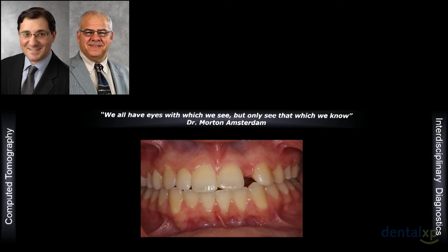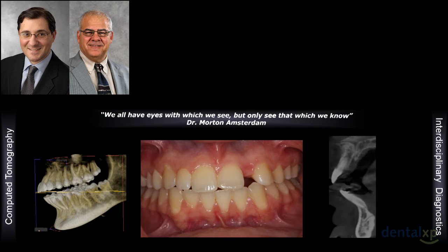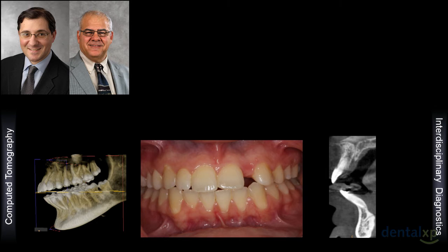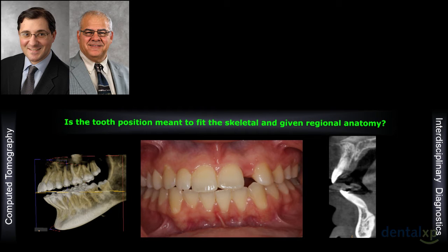This is a patient that came to our practice several years ago. The issue was referring this patient for a dental implant at number 10. With the ability of imaging and looking at the patient on a much more cranial-mandibular global scope, the real question is: is the skeletal and regional anatomy correct for the given tooth position? Today we're going to show how we're morphing the most plastic structure of human anatomy — the dental alveolar bone — and allowing the teeth to move into it.